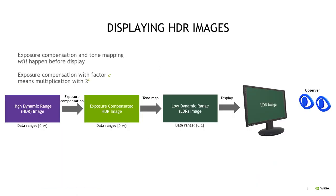Let's begin by framing the problem. We make one key assumption, which is that the HDR images our renderers output will not be shown directly on an HDR display. Instead, they will be exposure compensated and tone mapped before they are shown to the observer. A simplified version of the pipeline is shown here. In this procedure, the exposure compensation has the largest impact on the displayed image.